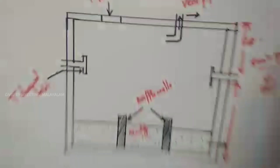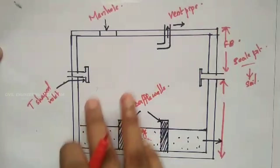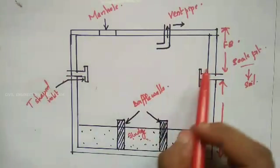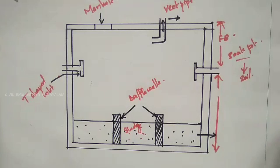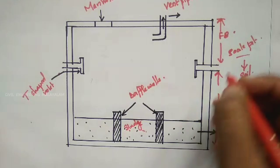Now we refer to the figure of the septic tank. This shows the septic tank with the manhole, the inlet and the outlet, the sludge, and the baffle walls. The freeboard is shown at the top, and the freeboard is 0.3 metres.